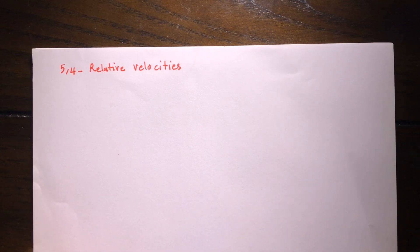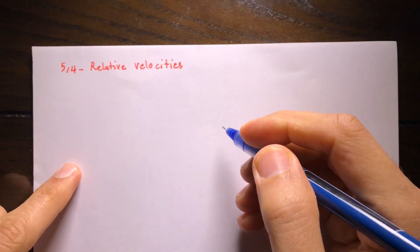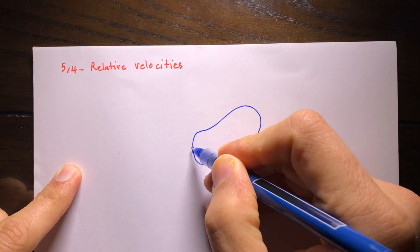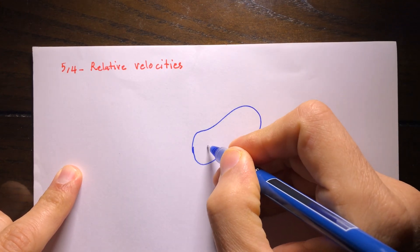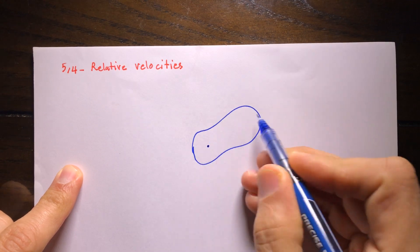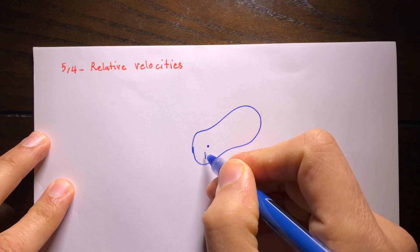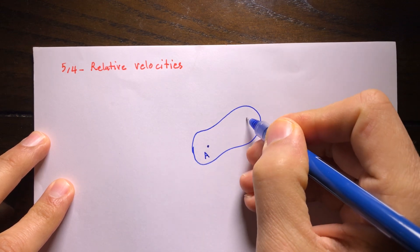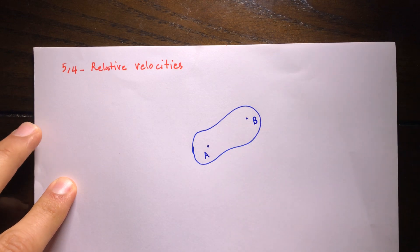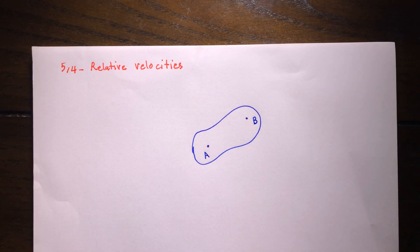In this section we are going to talk about the velocity of different points of a rigid body and how they are related to each other. Consider any rigid body — this time it is not connected to ground. It is an arbitrary rigid body that can move and rotate. We will consider two points on it and examine how their velocities are related.